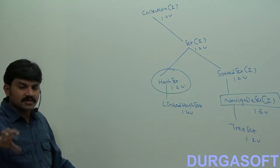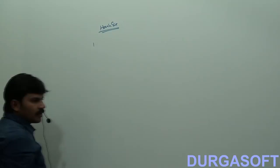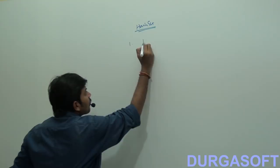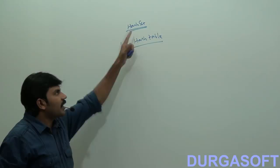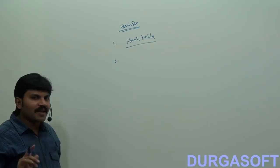Now, the first implementation class we have to discuss is HashSet. The underlying data structure for HashSet is a Hash Table. Based on the Hash Table data structure, Java's HashSet concept is implemented.